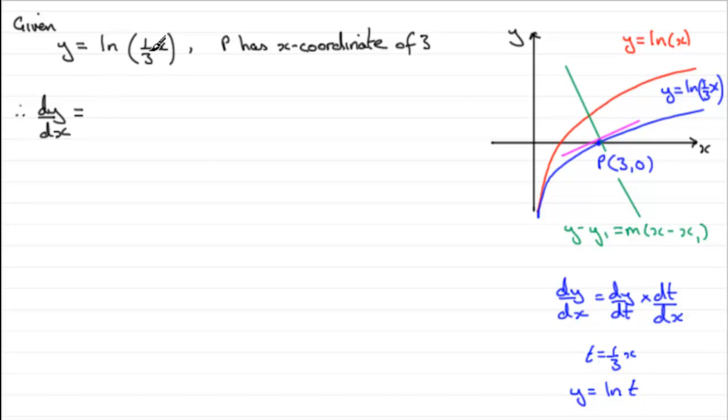1 over t, t being one-third x, is going to result in 1 over one-third x. So that is dy/dt. Let's just put that in brackets. Now we need to multiply this by dt/dx, so I need to differentiate this with respect to x, and it just gives me one-third. So I'll just put that up there. Clean this up. The thirds cancel and you're just left with 1 over x.